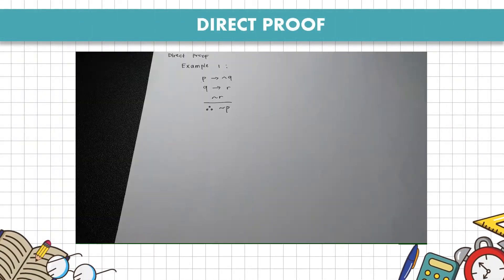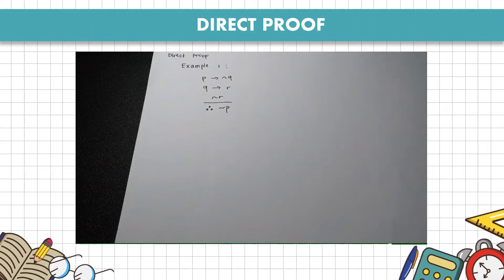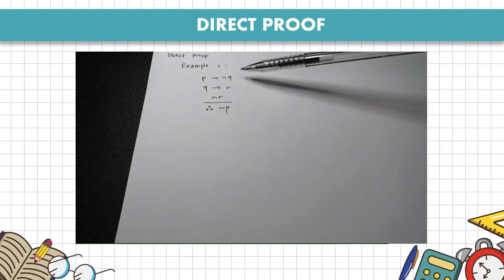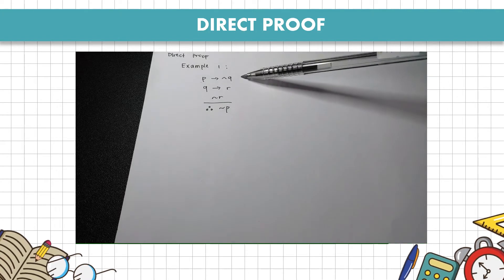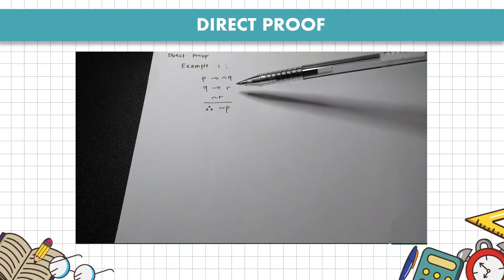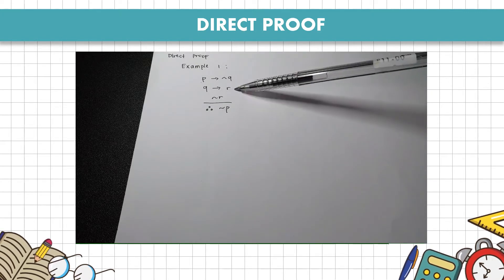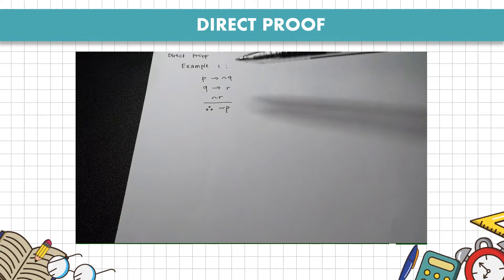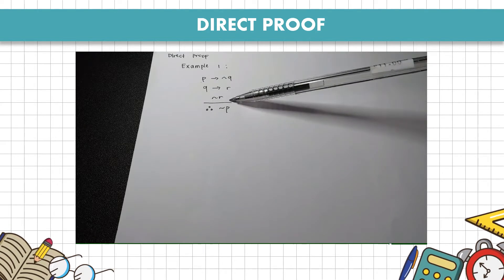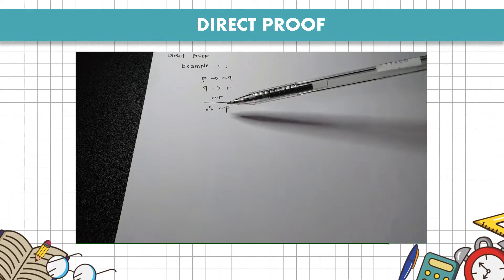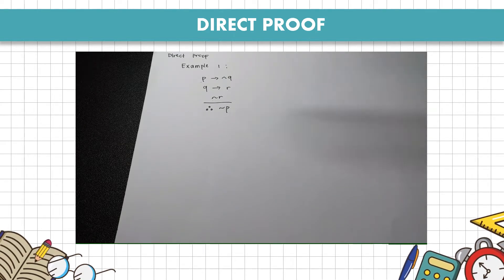For example number 1, we have 3 premises. The first premise is P implies not Q. The second premise is Q implies R. And the last premise is not R. We want to prove the conclusion: not P.